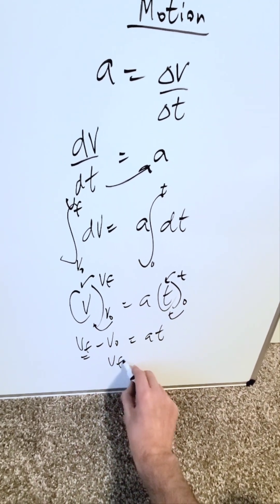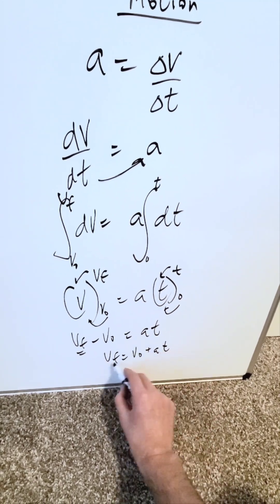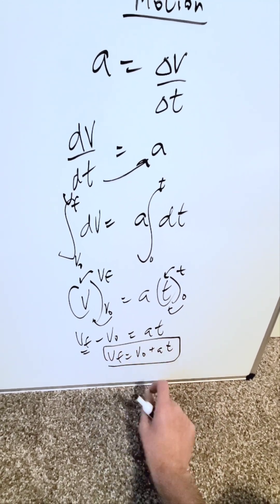Solve for vf. What will you have? Your final velocity is equal to your initial velocity plus acceleration times time. And you know this to be a kinematic equation.